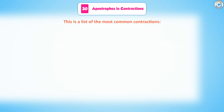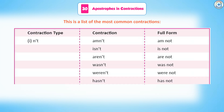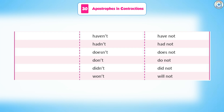This is a list of the most common contractions. Negative contractions with 'not': ain't (am not), isn't (is not), aren't (are not), wasn't (was not), weren't (were not), hasn't (has not), haven't (have not), hadn't (had not), doesn't (does not), don't (do not), didn't (did not).